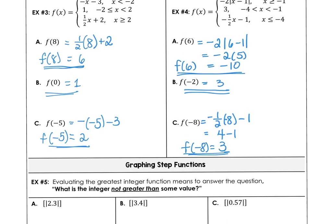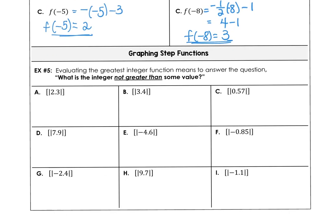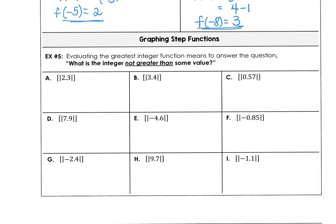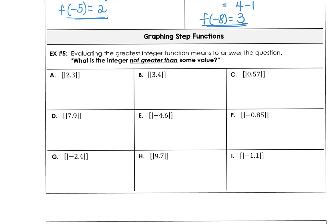Let's look now at graphing step functions and what it means to evaluate the greatest integer function. So when you see the greatest integer of 2.3, you think about stepping back to the integer that's not greater than 2.3. So in your mind, if you visualize the number line, you want to find the integer not greater than 2.3. So that would be two. The integer not greater than 3.4 is 3. The integer not greater than 0.57 is 0. The integer not greater than 7 and 9 tenths is 7.